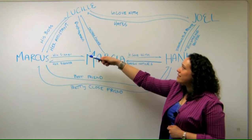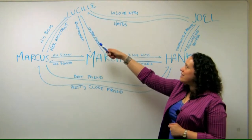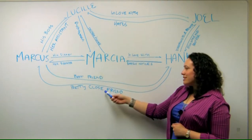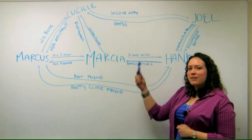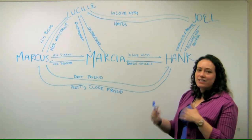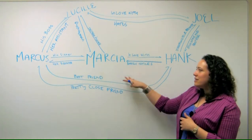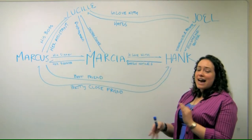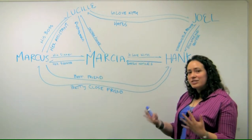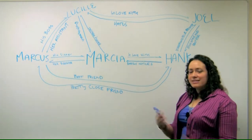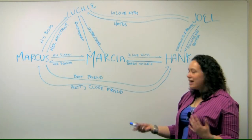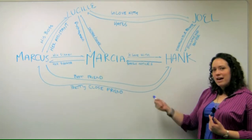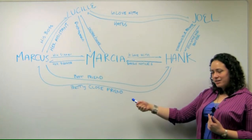You do the same with the other characters — boss, assistant, in love with, hates, that sort of thing. Best friend versus pretty close friend, and it helps you analyze how they interact with each other. You can kind of see that even though Marcus might approach a situation in a scene as the best friend, it's not going to be the same from Hank's side, and you can keep that in mind by having a character map.